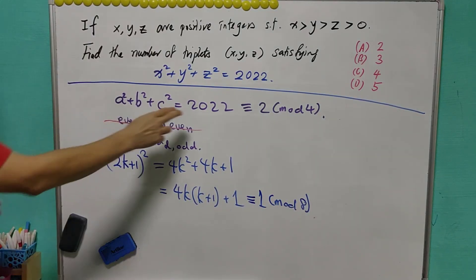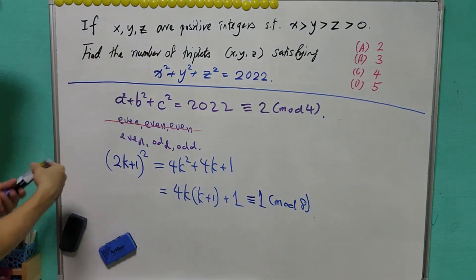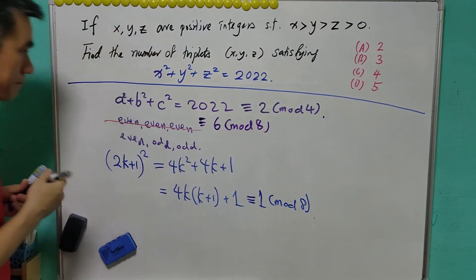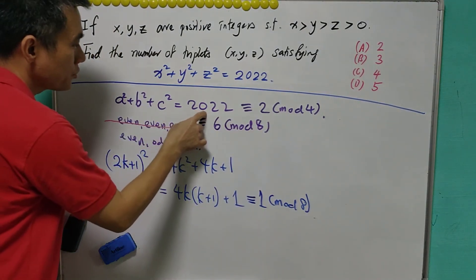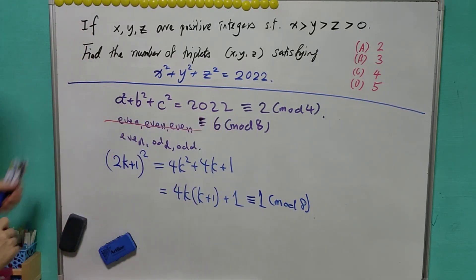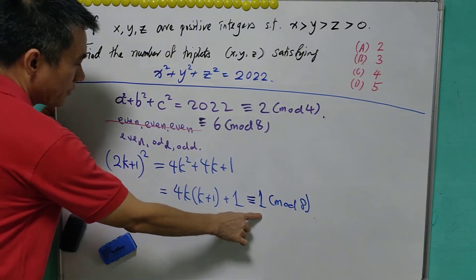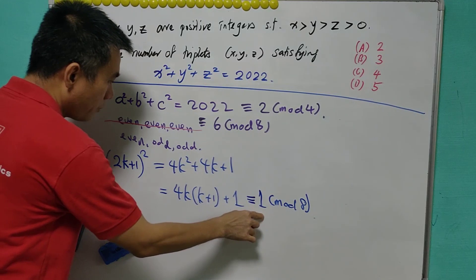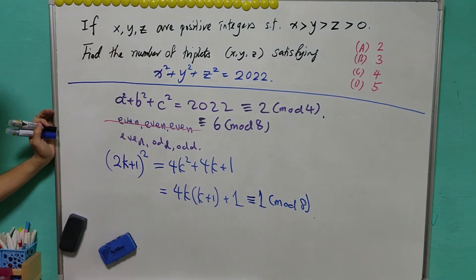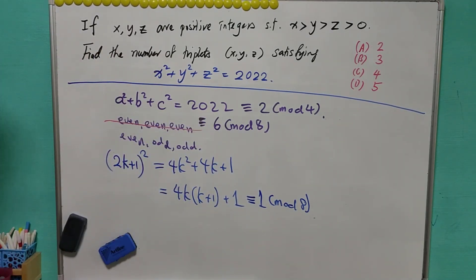Now, we look at 2022 again. It is 2 modular 4, but it is also 6 modulus 8, meaning that 2022 will give you a remainder of 6 when it divided by 8. We know that b square will give you a remainder of 1, c square will give you a remainder of 1 when it divided by 8. It means that a square have to give a remainder of 4, so that the sum will give a remainder of 6 when it divided by 8.